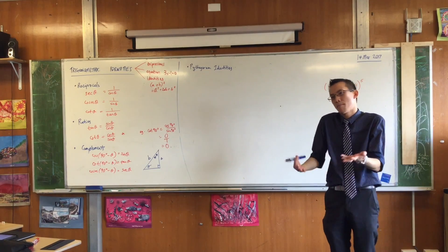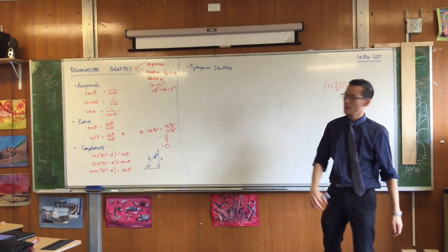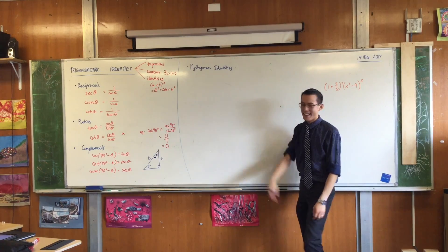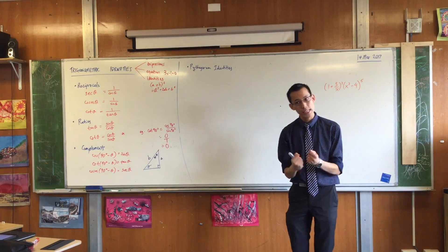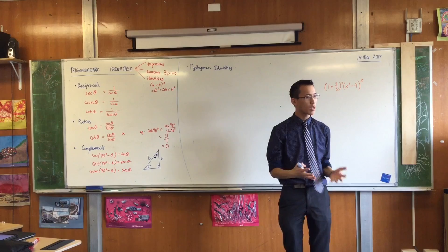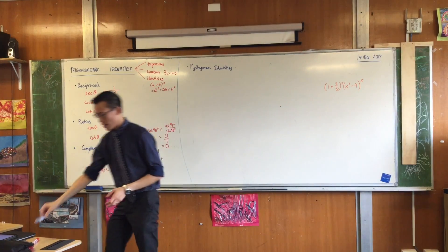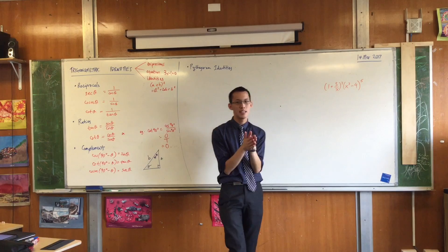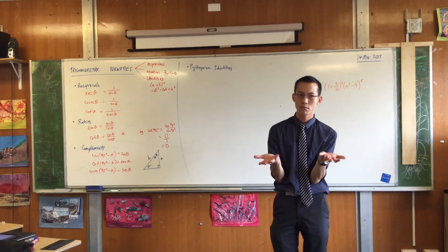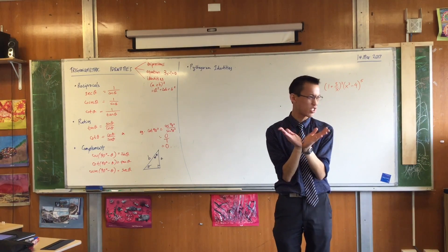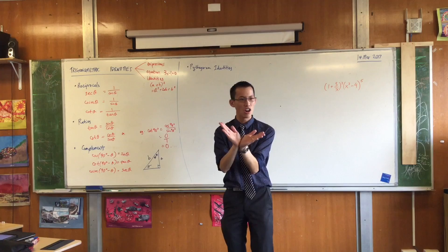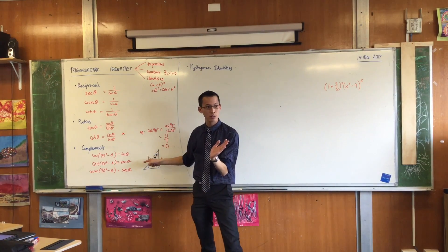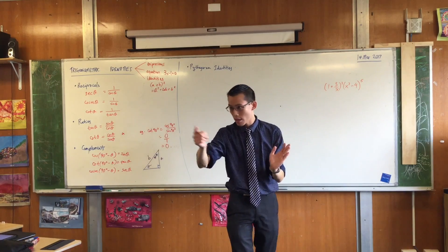Those ones you pretty much just have to remember them and use them — not that big a deal. But this set of guys, you're going to have to work on these and really understand what's going on. So what I want you to recall is: we said if you're in a right angle triangle, your theta is limited to 90 degrees — acute angles, that's all you've got. And we said that's kind of not good enough. Angles can be much bigger than that. So what did we do? We abandoned right angle triangles and we went to the unit circle.